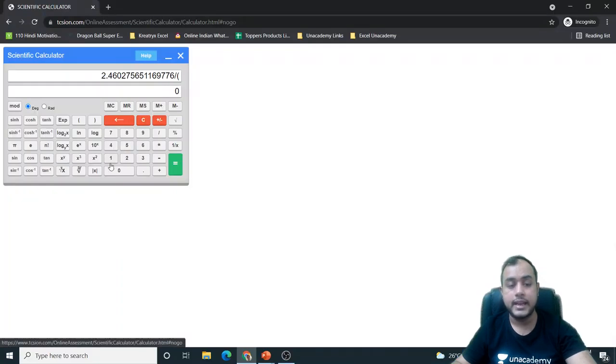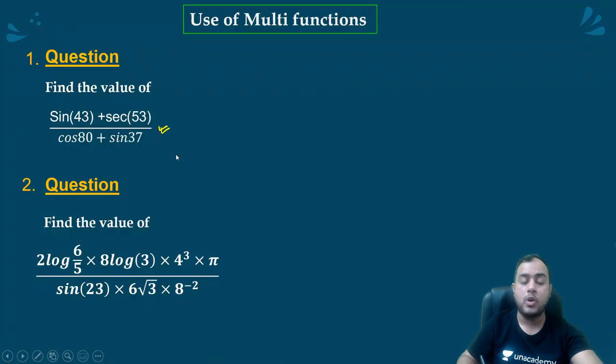You need cos 80 plus sin 37. Close the bracket. Even without memory function, we have calculated 3.172 by the use of brackets.